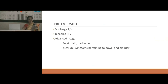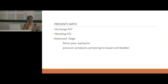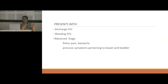CA Cervix, when it comes, is already in the late stage — advanced stage. The symptoms which we get are mostly in the last stages of 3A, 3B and stage 4. Symptoms include discharge per vaginum, bleeding per vaginum, and in advanced stage: pelvic pain, backache, and pressure symptoms pertaining to bowel and bladder.